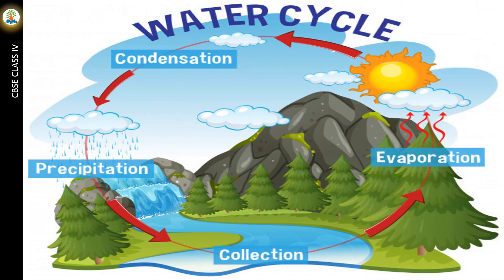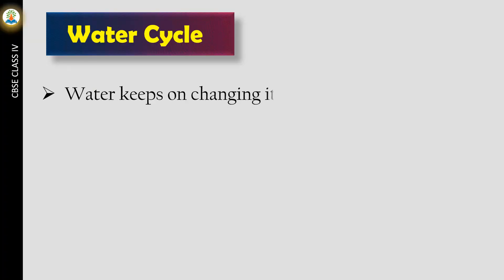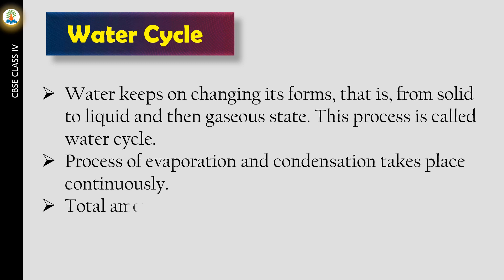Due to the heat of the sun, water from rivers, oceans, seas, and ponds evaporates. The water vapor moves upwards with air. It then condenses and forms water droplets. These water droplets come closer to each other and form clouds, which then fall on the earth as rain and snow. Water keeps on changing its forms from solid to liquid and then gaseous state. This process is called water cycle. The process of evaporation and condensation takes place continuously. Total amount of water on the earth remains constant, thus water cycle continues in nature.